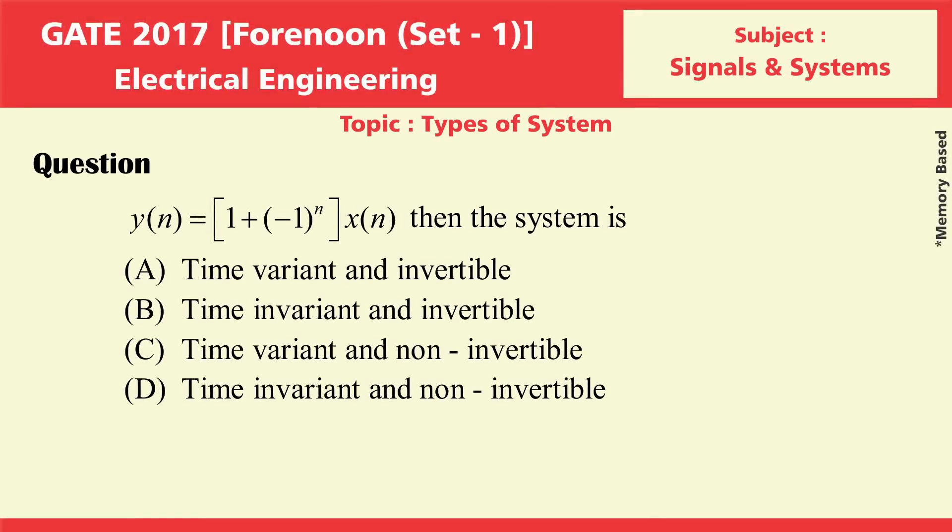y of n is equal to (1 + (-1)^n) multiplied with x of n. Then the system is: option A time variant and invertible, option B time invariant and invertible, option C time variant and non-invertible, option D time invariant and non-invertible.